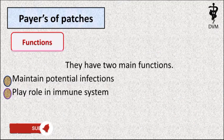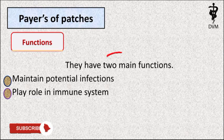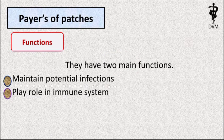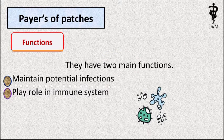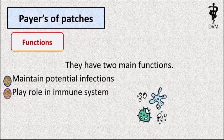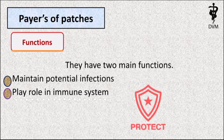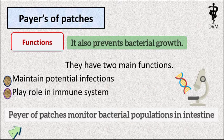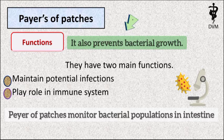Function of Peyer's Patches: These have two main functions. They maintain potential infections and play a role in the immune system. They prevent bacterial populations in the intestine and prevent their growth.